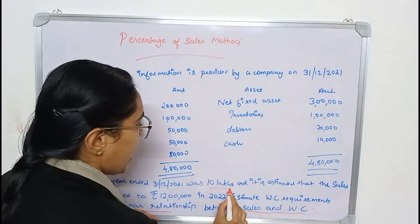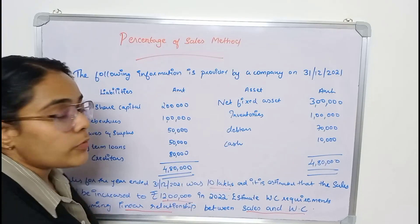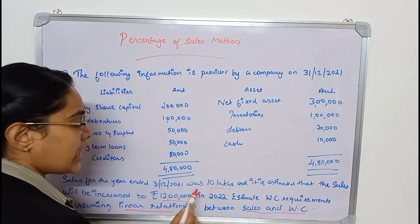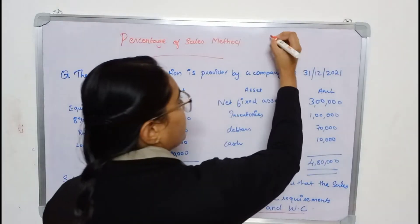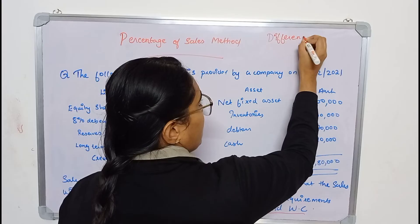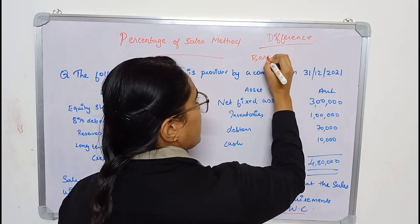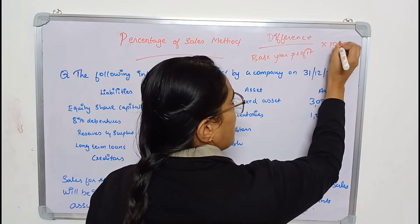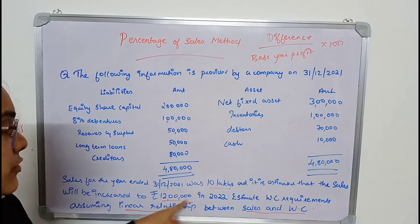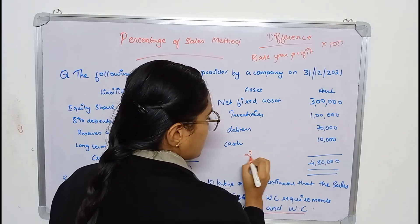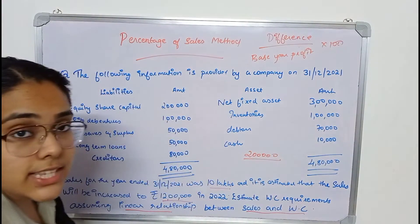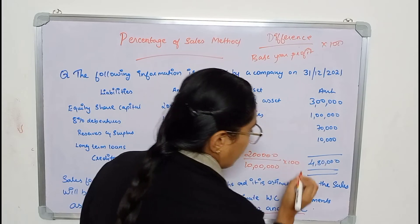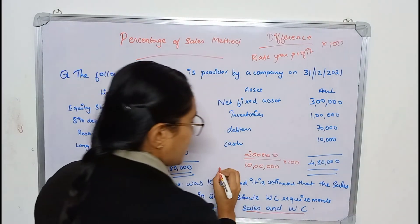In the previous year sales were 10,00,000 and now they have increased to 12,00,000. The percentage change is calculated as: difference divided by base year sales, multiplied by 100. The difference is 2,00,000, divided by 10,00,000, into 100 — giving us 20%.